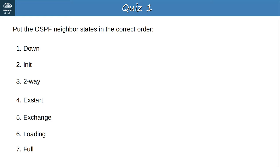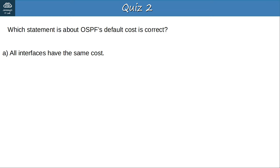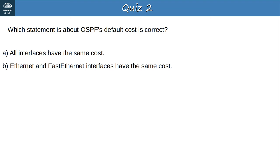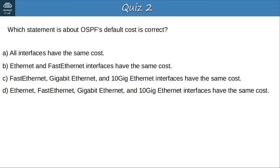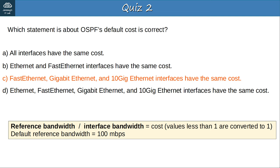Question 2: Which statement about OSPF's default cost is correct? The answer is C — fast Ethernet, gigabit Ethernet, and 10GB Ethernet interfaces all have the same cost by default. The cost is calculated by dividing the reference bandwidth by the interface bandwidth. The default reference bandwidth is 100 Mbps, so a fast Ethernet interface has a cost of 1. Anything faster also has a cost of 1, because all values less than 1 are converted to 1.